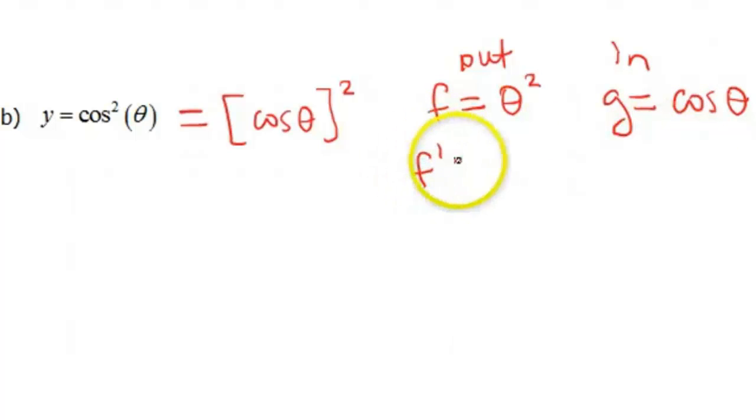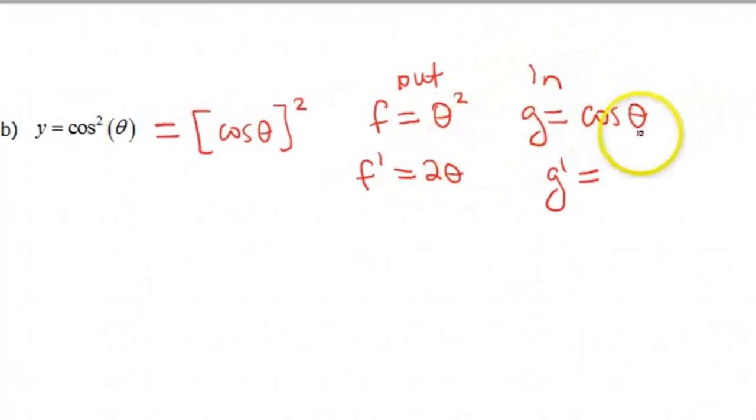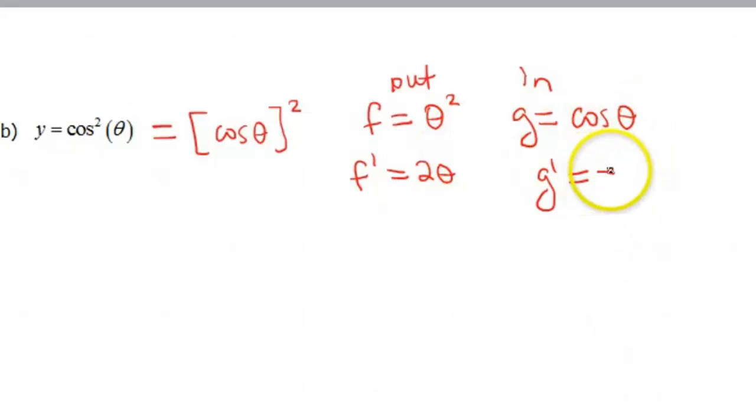What are our derivatives? f' and g'. Again, if you don't remember, pause the video and go back and look it up. But hopefully by now these are starting to become second nature to you. The derivative of θ² is 2θ. This is a power rule, so you bring the 2 down and reduce your power by 1. The derivative of cos(θ) is -sin(θ).